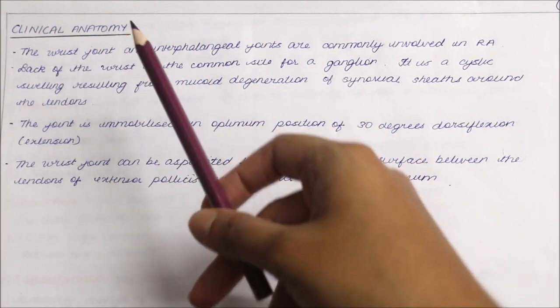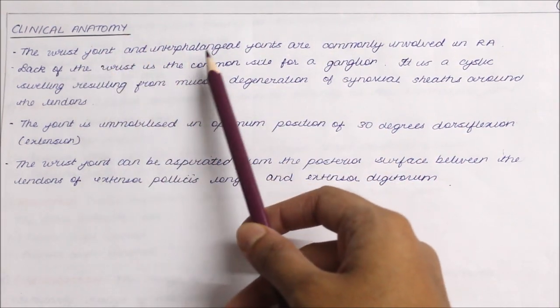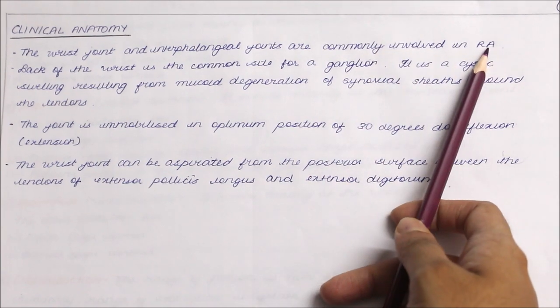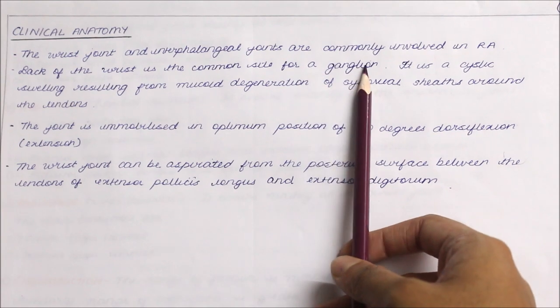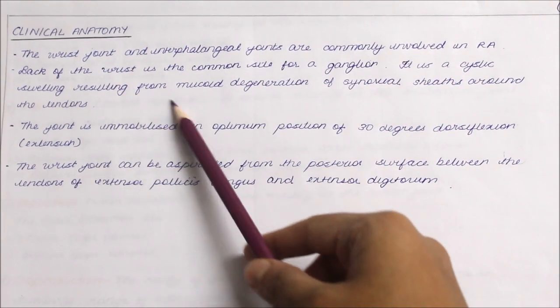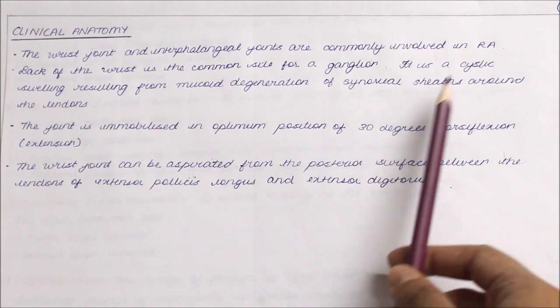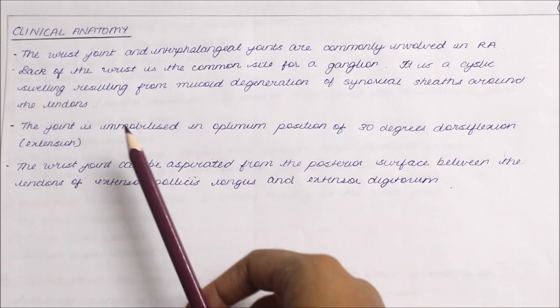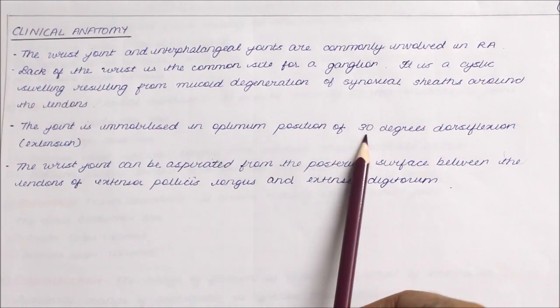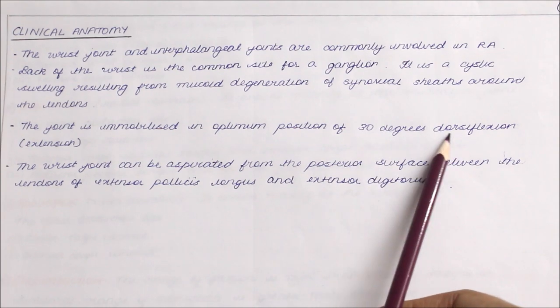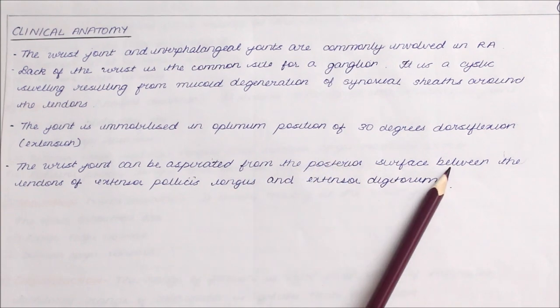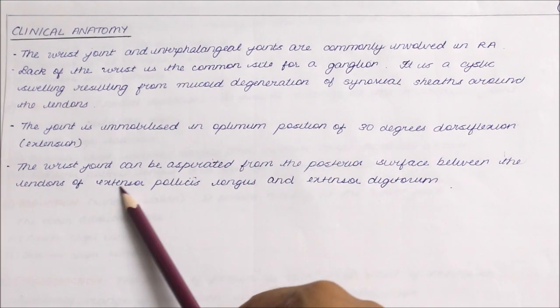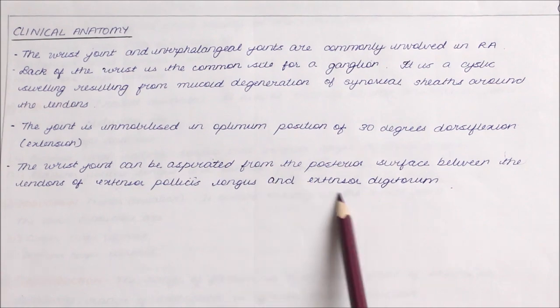Looking at the clinical anatomy: the wrist joint and interphalangeal joints are commonly involved in rheumatoid arthritis. The back of the wrist is a common site for a ganglion — a cystic swelling resulting from mucoid degeneration of synovial sheets around the tendons. The joint is immobilized in the optimum position of 30 degrees dorsiflexion (extension). The wrist joint can be aspirated from the posterior surface between the tendons of the extensor pollicis longus and extensor digitorum.